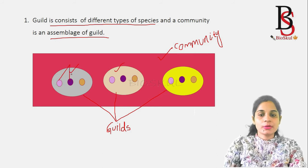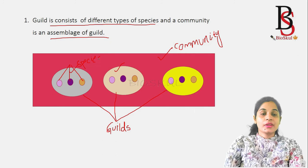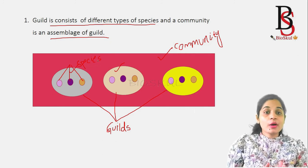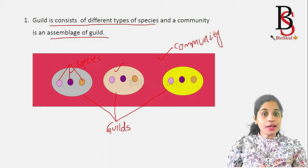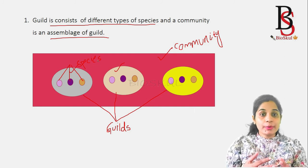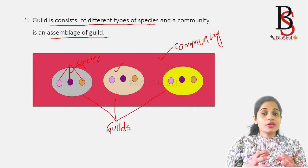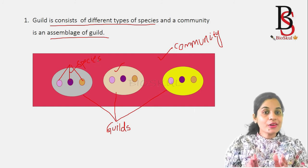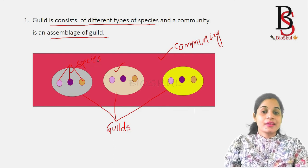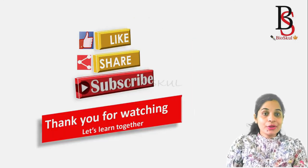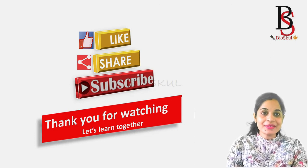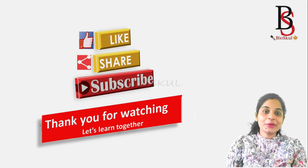These are the different species present within each guild. So, ecological guilds are species which exploit environmental resources in a similar way. A guild consists of one or more types of species, and different guilds together form a community. Now you have a clear concept about ecological equivalence and ecological guilds. Thank you for watching — if you find this video beneficial, please do share and don't forget to subscribe to the channel for more such videos. Bye-bye, see you in the next video.